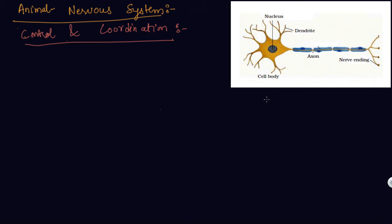So this is the structure of a neuron. In animals, the control and coordination is provided by nervous and muscular tissues.